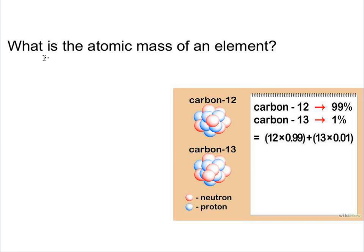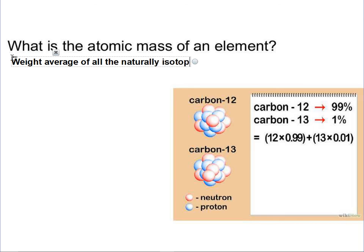We have now covered atomic number and mass number. Atomic number is the number of protons and electrons and tells you the element name. The mass number tells you how many protons and neutrons are added together — what's in the nucleus and the mass of the element. The atomic mass is the weighted average of all the naturally occurring isotopes' masses. In this example, we're assuming there are only two types of carbon isotopes: carbon-12 and carbon-13.